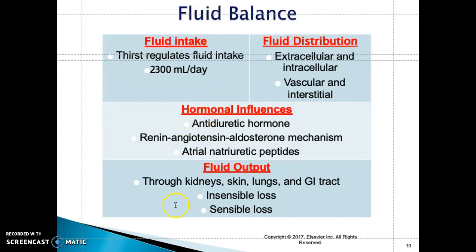Fluid output occurs through the kidneys, skin, lungs, and GI tract. There is insensible loss and sensible loss. Sensible loss is something you can actually measure — for example, measuring urine output. Insensible loss is water lost through the skin via evaporation, which cannot be directly measured.